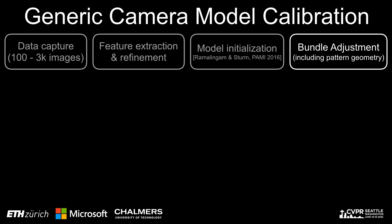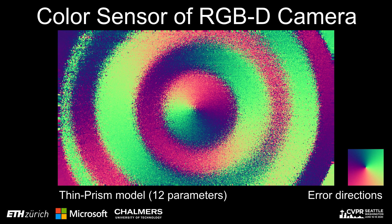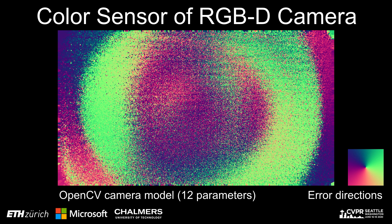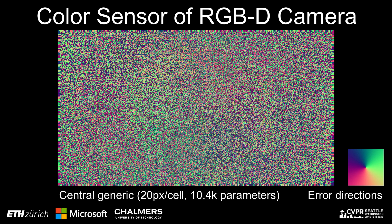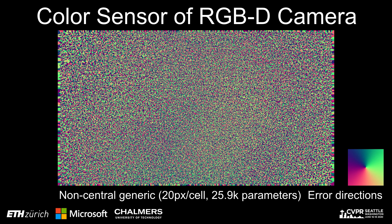Next, we compare generic calibrations obtained with our pipeline to traditional parametric models. This is the same visualization of the reprojection error directions shown earlier. Here, we use the thin prism model with 12 parameters to calibrate the color camera of an RGB-D sensor. We also show the calibration for the same camera obtained with OpenCV's model, which also has 12 parameters. There is a clear bias for certain viewing directions, indicating that the model does not fit the camera geometry well in those regions. Switching to a central model with about 5,000 parameters significantly reduces the bias. Increasing to 10,000 parameters improves calibration accuracy further. We obtained the best results with a non-central model with around 26,000 parameters, resulting in a nearly random distribution of error directions.